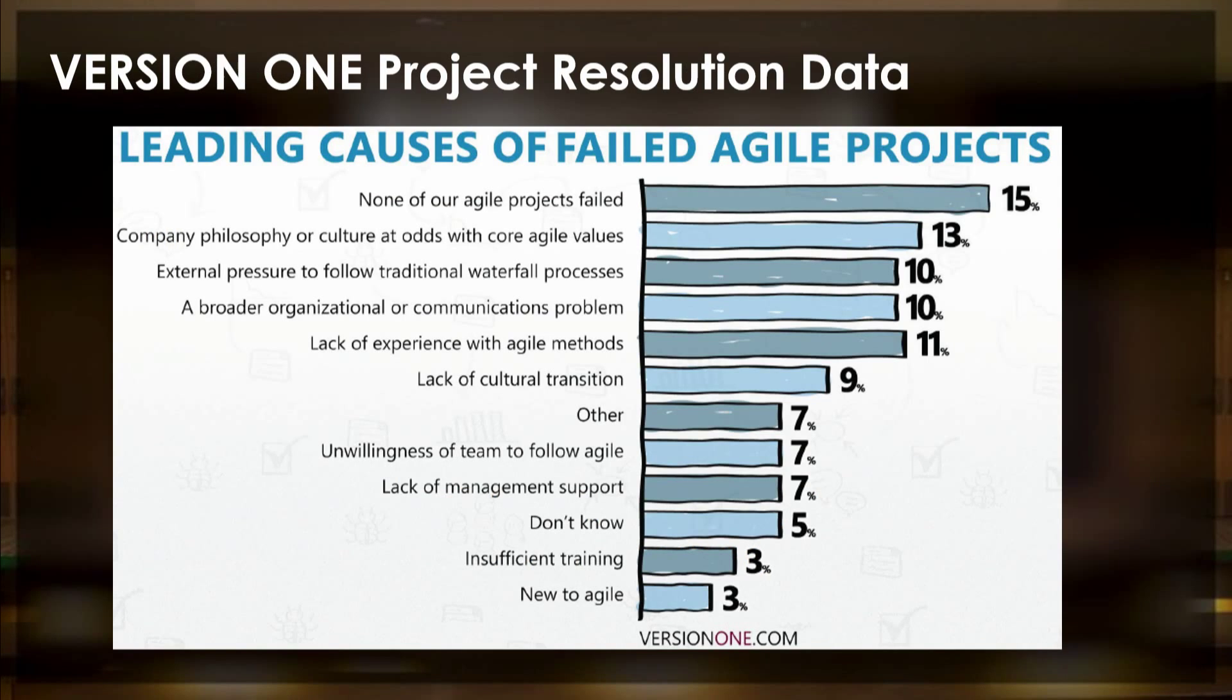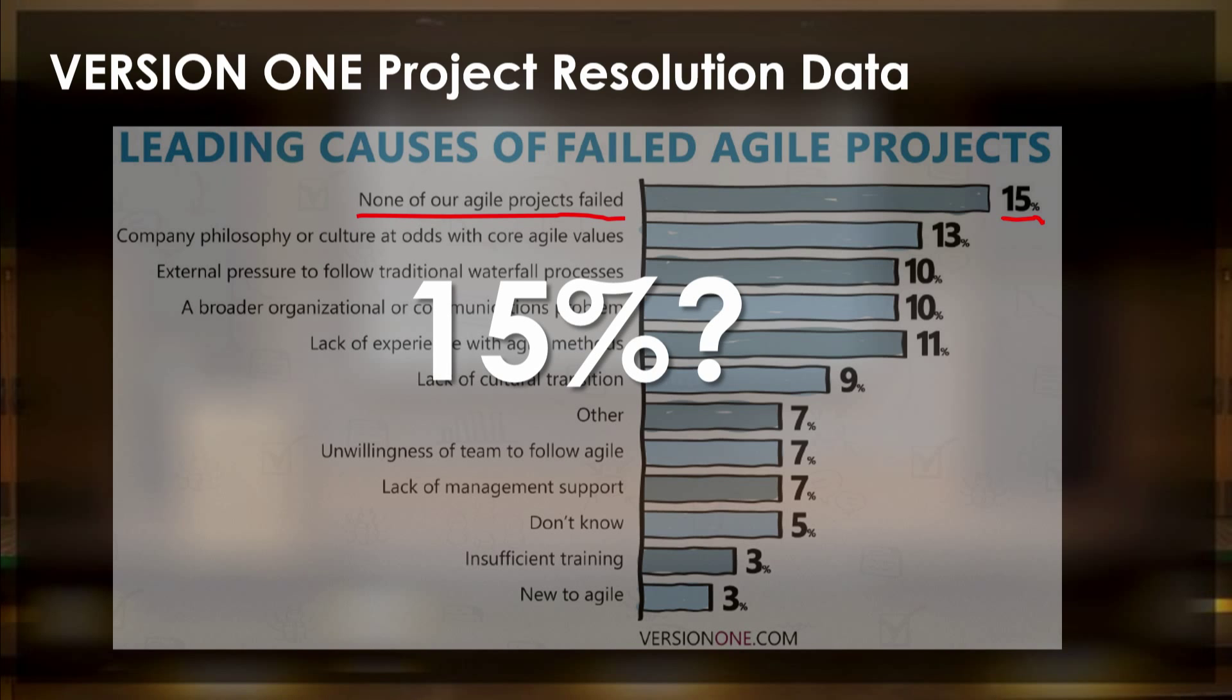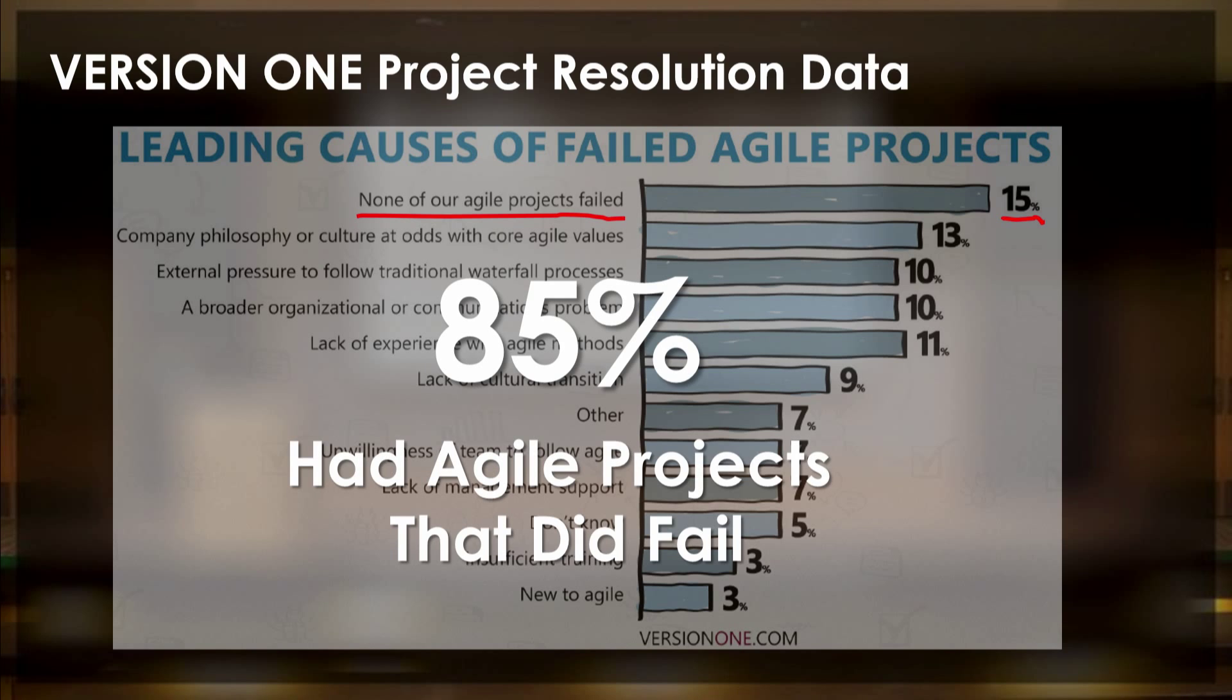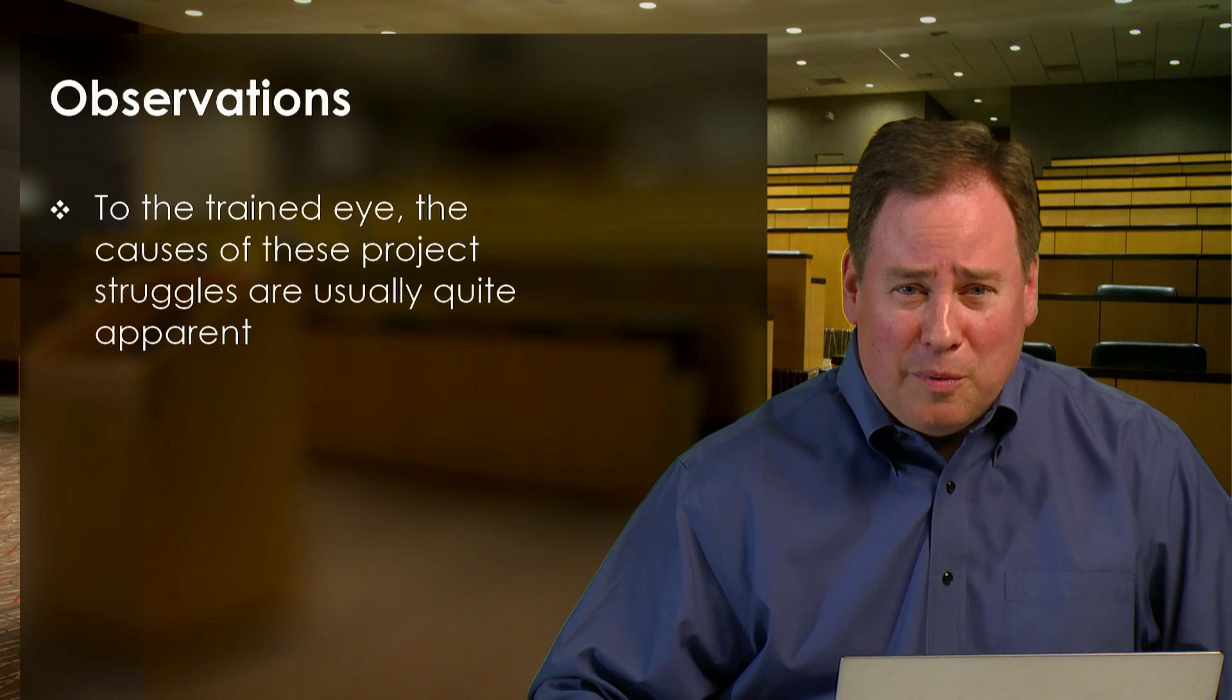We also see reports like this one from Version One that talk about project resolutions of Agile projects. And at first glance, this doesn't look too bad. The top line that says none of our Agile projects failed is the biggest bar on the graph. But if you really take a harder look at that, it's actually pretty grim. Only 15 percent of the respondents said that none of our Agile projects failed. And if you think about that, 15 percent saying that none of our projects failed means that 85 percent had Agile projects that did fail. And that really is not as good an outcome or as good a track record as we would really like to see.